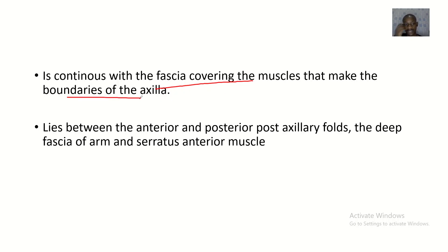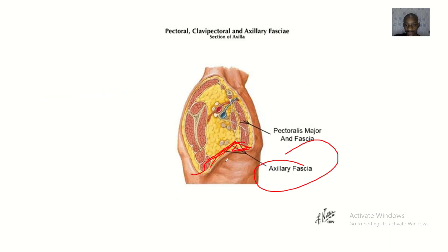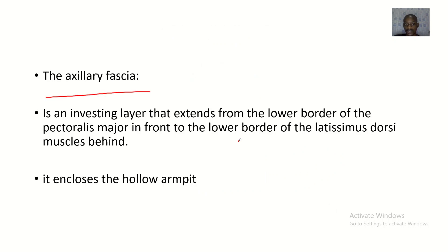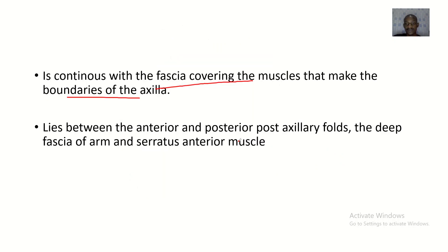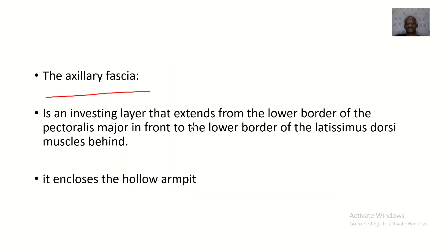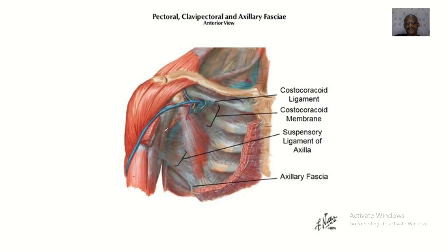It is continuous with the fascia covering the muscles that make the boundaries of the axilla, and it lies between the anterior and the posterior axillary folds. This muscle here is the anterior axillary fold, and this muscle behind is the posterior axillary fold. The fascia lies between them, continuous with the deep fascia of the arm and the serratus anterior muscles.